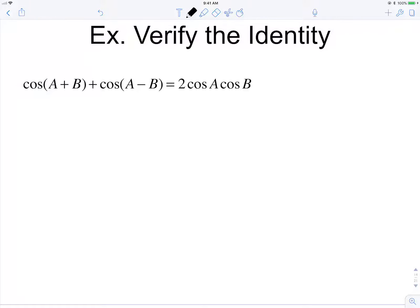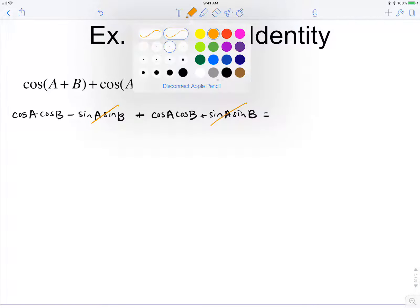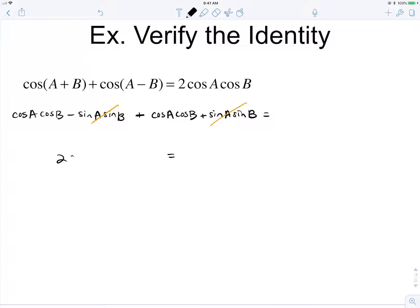Looking at this identity, the left-hand side is obviously more complicated. We can use the sum identity for cosine, so cosine of A times cosine of B minus sine of A times sine of B. And then the difference identity for cosine would be cosine A times cosine of B plus sine A sine B. Well, sine A times sine B will end up canceling. So we're just left with 2 times cosine A times cosine B, done.